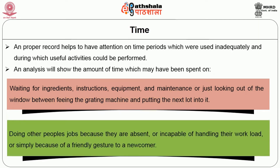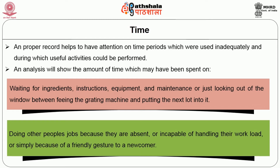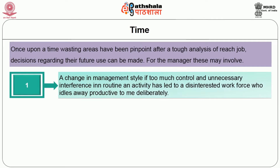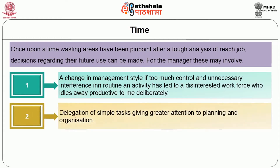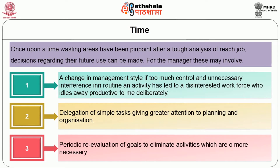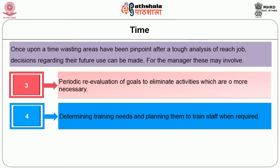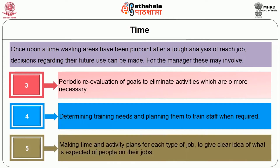Another example of time wasting is doing other people's jobs because they are absent, incapable of handling their workload, or simply as a friendly gesture to a newcomer. Once time-wasting areas have been identified through analysis, decisions regarding future use can be made. For the manager, these may involve a change in management style if too much control and unnecessary interference has led to a disinterested workforce; delegation of simple tasks with greater attention to planning and organisation; periodic re-evaluation of goals to eliminate unnecessary activities; and determining training needs and planning to train staff when required.